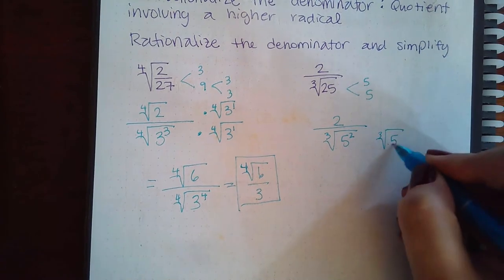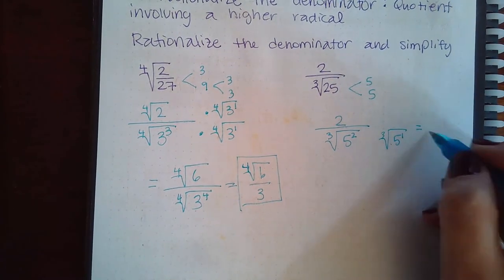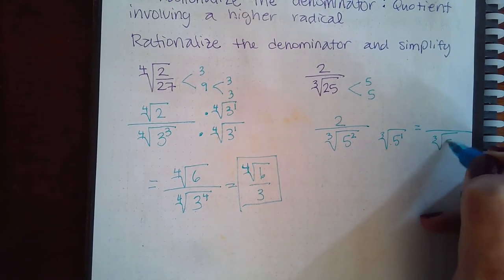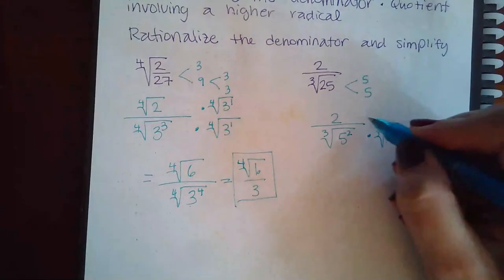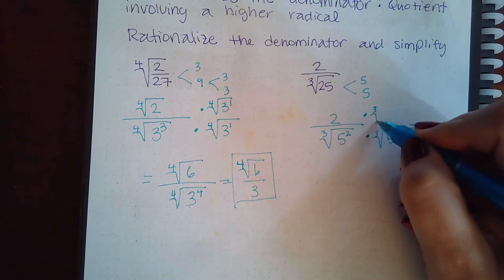So that means I need an extra one so that when I'm done I have 3 and 3. But whatever you do to the bottom you have to do the exact same thing to the top.